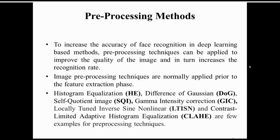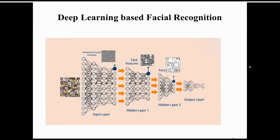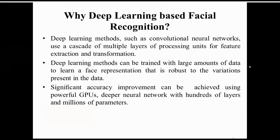The CNN architecture is made of several layers: convolution layers, max pooling layers, and at the end a classification layer. Data is given to the input layer, then the hidden layers start extracting face features, and the output from the hidden layers goes to the output layer where classification takes place.